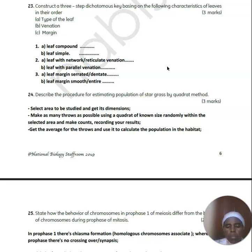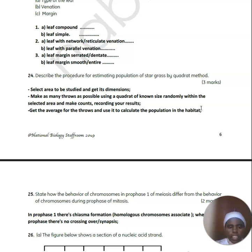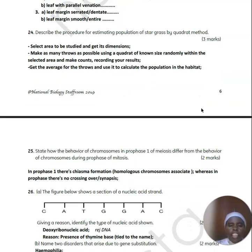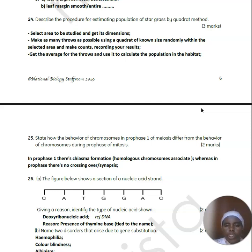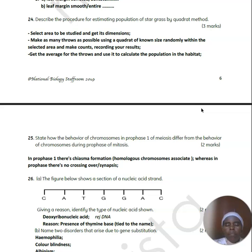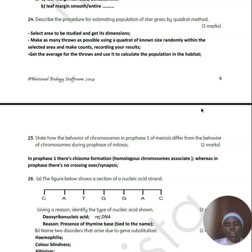To estimate the population of star grass using the quadrat method: first identify the area, estimate its length and width approximately, then throw as many quadrats as possible randomly within the selected area. Count the number of organisms inside each quadrat, calculate the average count, and use it to estimate the population of the star grass.